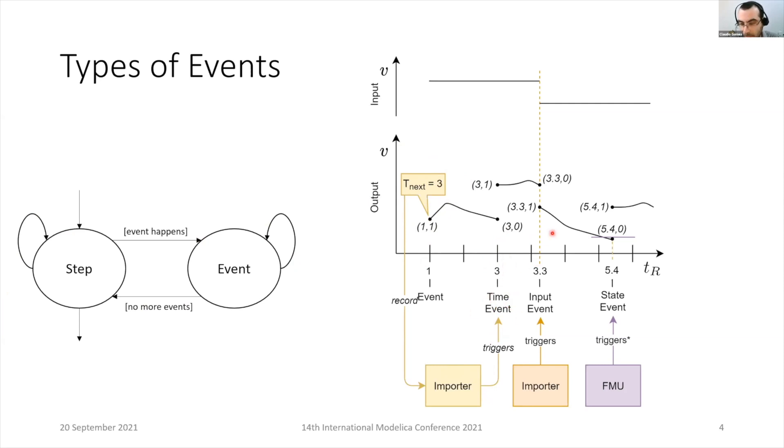There's a second kind of event called an input event. In this case, the importer is changing the input of the FMU and pushes the FMU into event mode to alert the FMU that such event is happening. This typically happens when discrete time inputs are being changed.